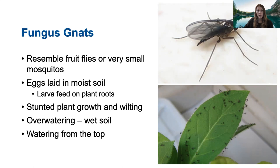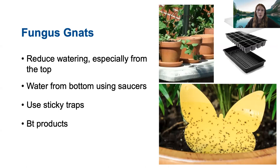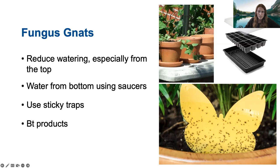Because fungus gnats lay their eggs in the top couple of inches of moist soil, we want to avoid heavy watering that leaves the soil saturated. Once seeds have germinated, try to allow the soil to dry a bit between waterings, and consider watering from the bottom using plant saucers or flat bottom trays under seed cell trays. Placing sticky trap cards in your greenhouse or wherever you're starting seeds is a great way to catch adult fungus gnats and also monitor the situation. If you start to notice more and more fungus gnats on the sticky cards, it's a good indicator that you need to adjust your practices. These sticky traps are available in all kinds of shapes and sizes — butterflies, plain rectangles — and are easy to find.